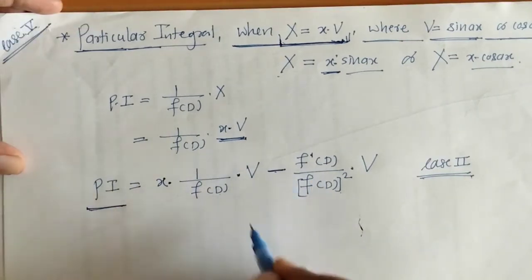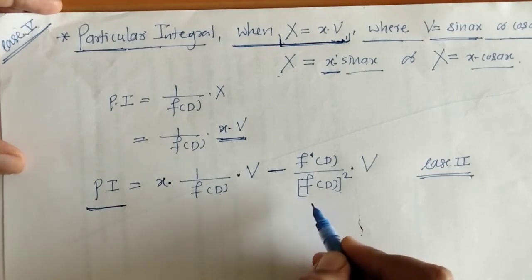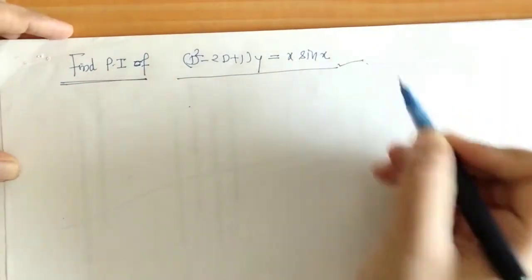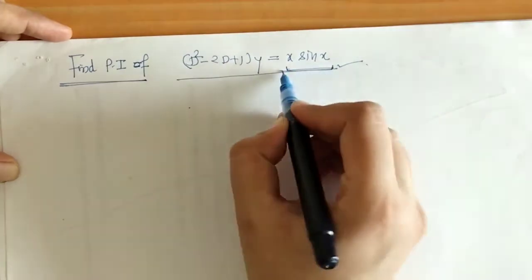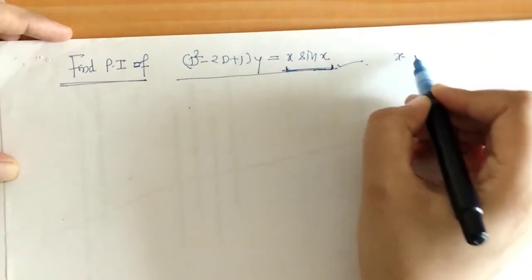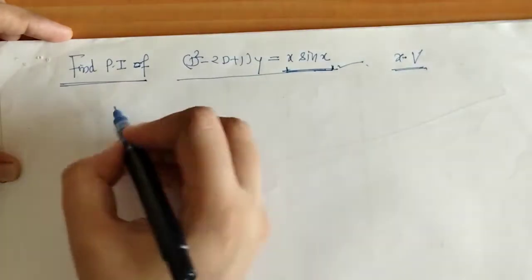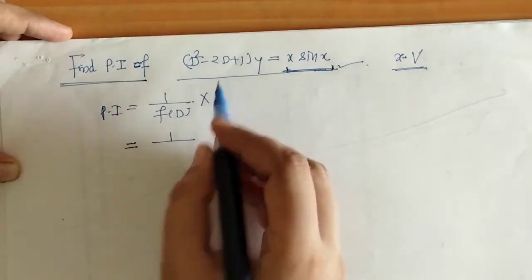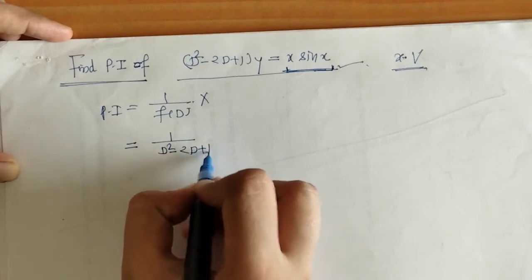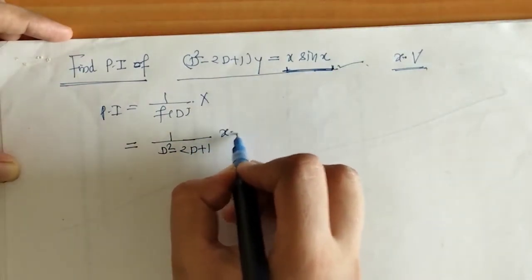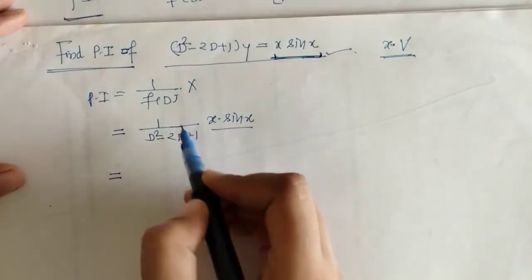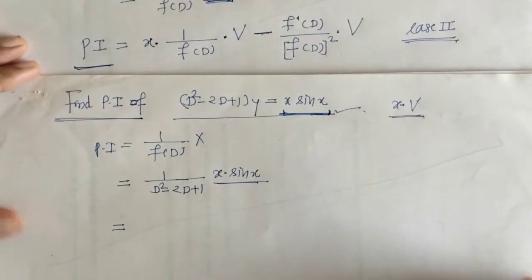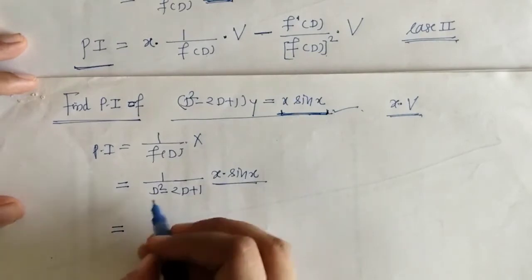To understand the working procedure of this rule, let us look at the first example. We have to find PI for this given differential equation. Here we can see x·sin(x) is present, which is of this type. So f(D) = D² - 2D + 1 and X = x·sin(x). We operate 1/f(D) on x·sin(x) using the formula.